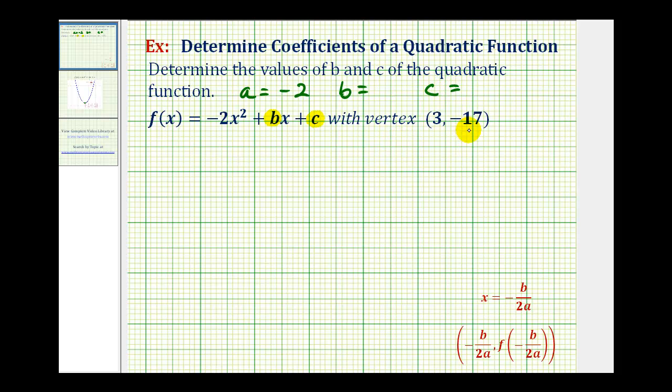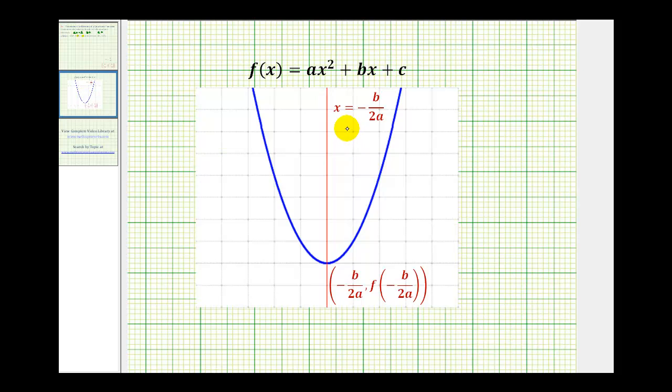If we look at the graph of a quadratic function just for a moment, we should know the equation for the axis of symmetry is x equals negative b divided by two a when our function is written in general form. The vertex is the only point that's on the parabola and the axis of symmetry. Therefore, the x coordinate of the vertex is equal to negative b divided by two a, the same formula used to determine the equation of the axis of symmetry.